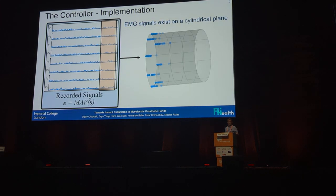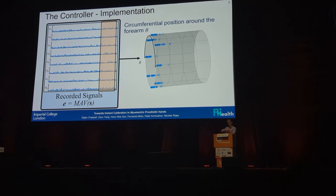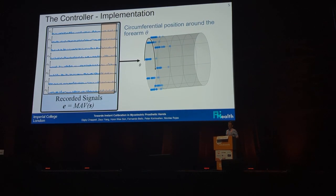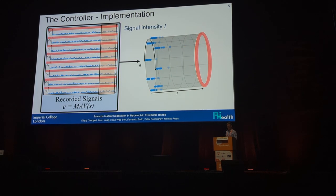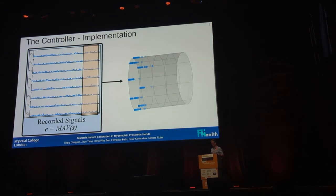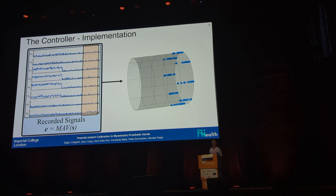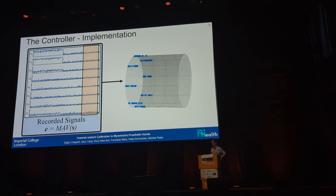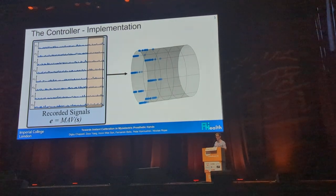We say the signals exist in a cylindrical plane. Around the wrap dimension is the circumferential position around the forearm — we're sampling equally spaced around those. In the linear dimension, we have signal intensity. All together, it looks something like this. So now we've got these in a nice space that we can do some stuff with.